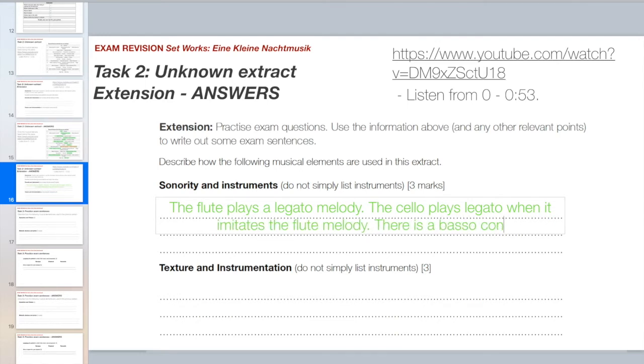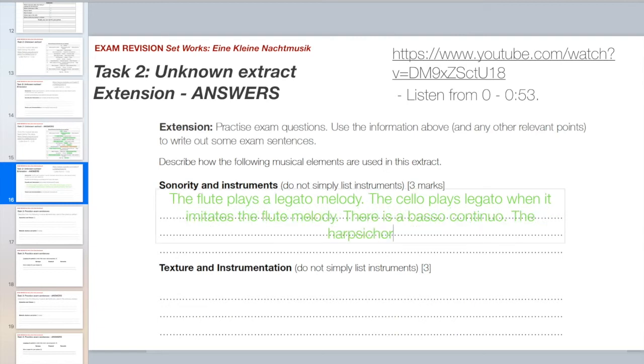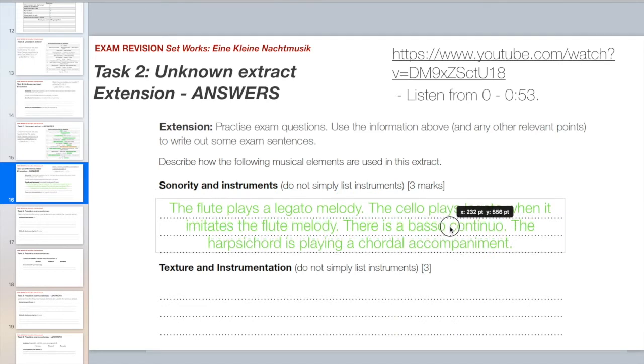There's a basso continuo, which is one of those things that is just very redolent, typical of Baroque music, a basso continuo, which means that cello playing a bass line plus the harpsichord playing the chords, and I would say the harpsichord is playing a chord or accompaniment.